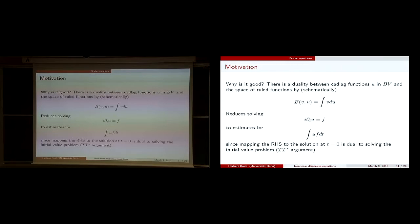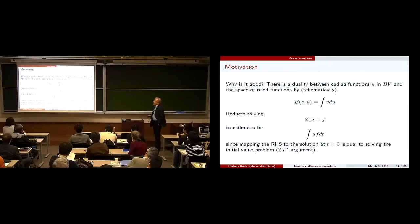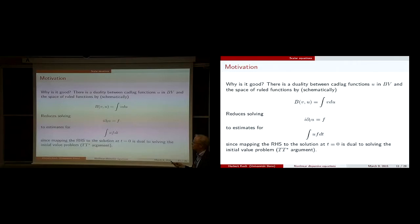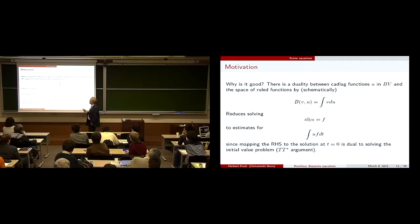Why should that be good? If you look at some duality — there's a duality between functions of bounded variation and the space of regulated functions via a sort of Stieltjes integral. There's a quadratic form. Regulated functions are bounded functions which have limits at each point from both sides.